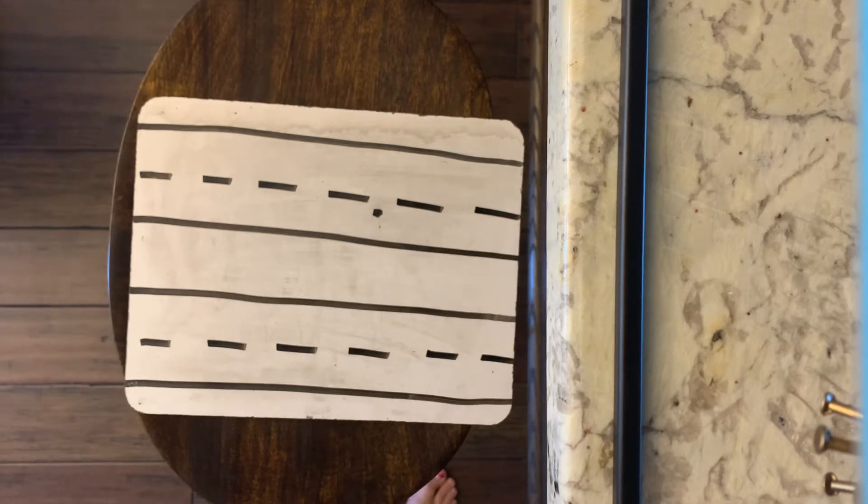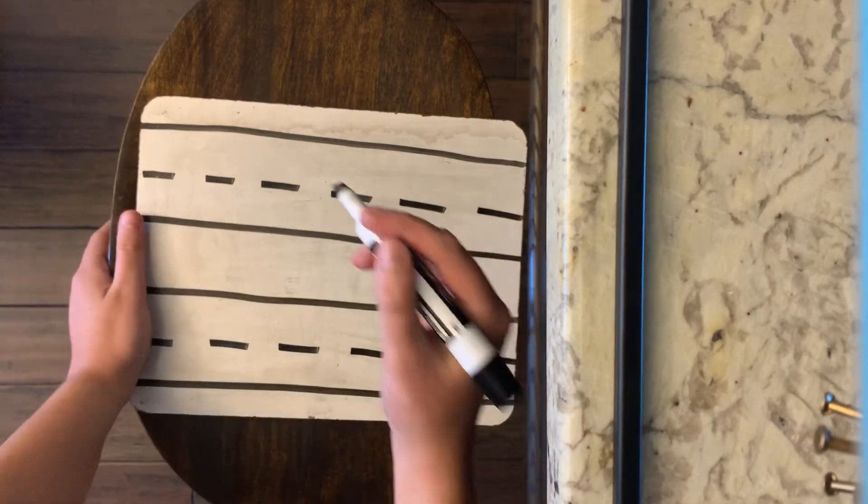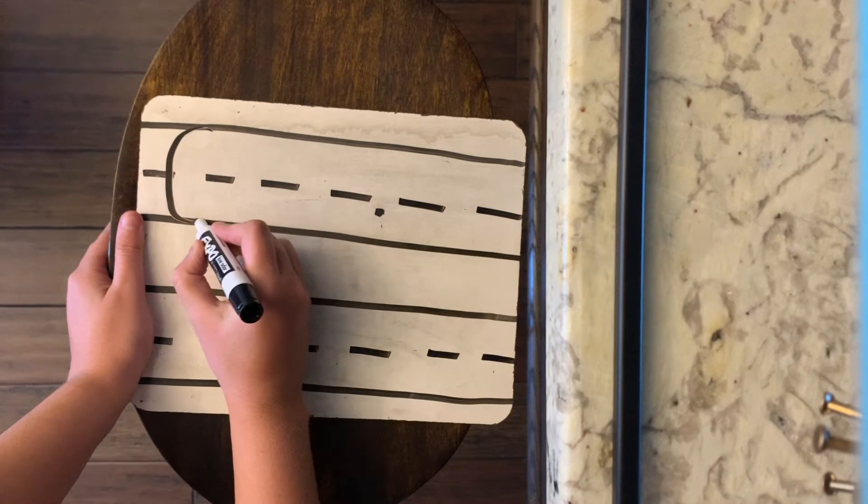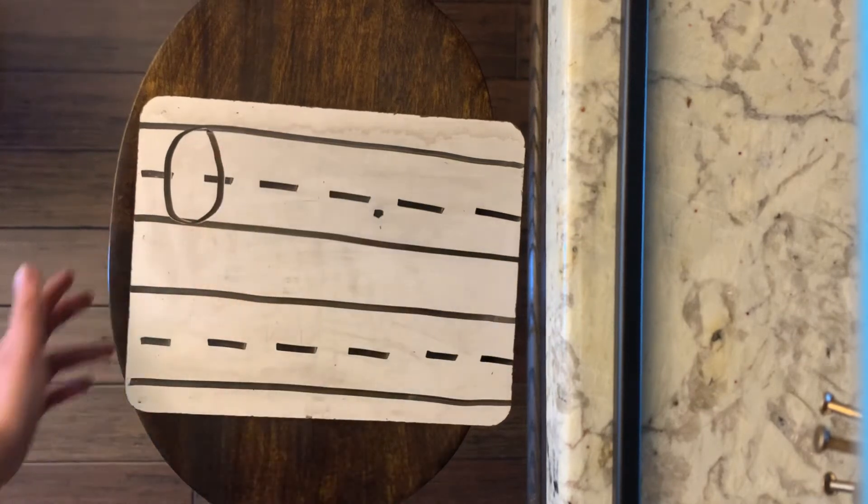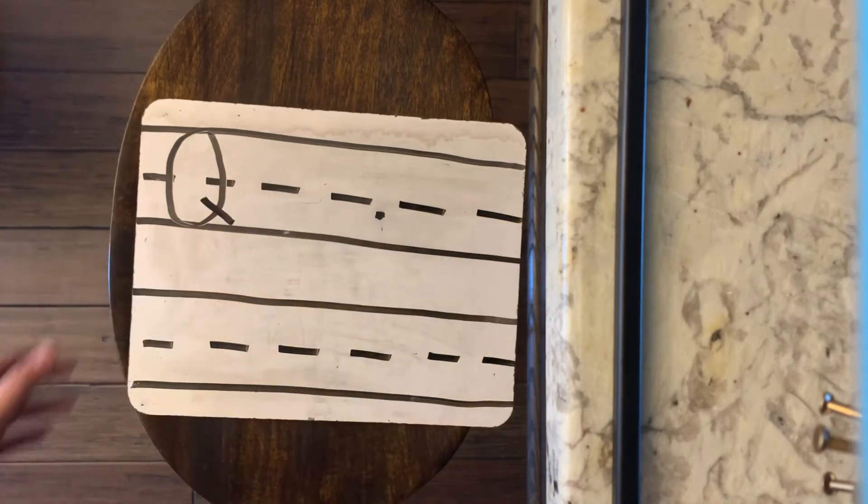Okay, so let's start with capital Q. For capital Q, super easy. We're just going to make a big letter O. Start at the top, go around, we're going to make a letter O. And to make capital Q, we're just going to do a slanted line right there at the bottom.